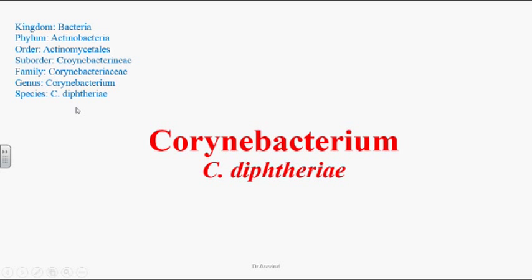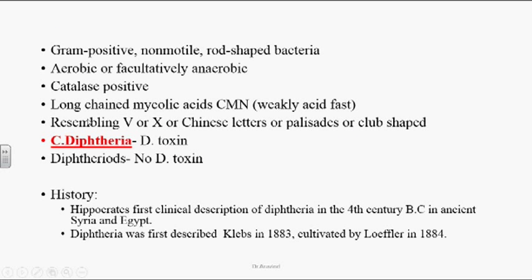The species is Corynebacterium diphtheriae. These organisms are gram-positive, non-motile, rod-shaped bacteria. They are aerobic and some are facultative anaerobic. They are catalase-positive organisms. In the cell wall of Corynebacterium diphtheriae, there are long-chain mycolic acids present. A few other bacteria also have these long-chain mycolic acids — they are Mycobacterium and Nocardia.